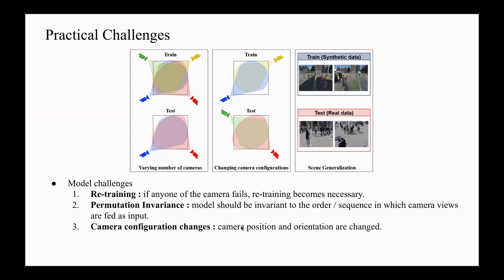Camera configuration changes. Given a scene, we change the camera position and orientation such that field of view is still overlapping and the cameras are covering the same scene. As shown in the figure, the model is trained on two cameras covering the scene. We change the camera position and orientation while still maintaining coverage of the same scene. The model should be adaptable to such changes.